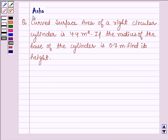Hello and welcome to the session. My name is Asha and I shall be helping you with the following question: Curved surface area of a right circular cylinder is 4.4 m². If the radius of the base of the cylinder is 0.7 m, find its height.